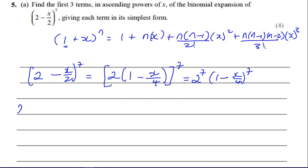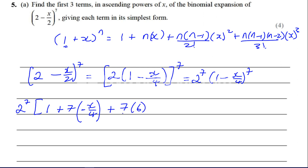So now I've got 2 to the power of 7 times (1 minus x over 4) to the power of 7. I'm going to expand that according to this pattern. I have a 1 in the leading place, and instead of x I'm going to have minus x over 4 — that's whatever's in that place, including its sign. So I've got 1 plus n — which is 7 — times minus x over 4, plus 7 times 6 over 2 factorial times minus x over 4 squared. That's the first three terms.